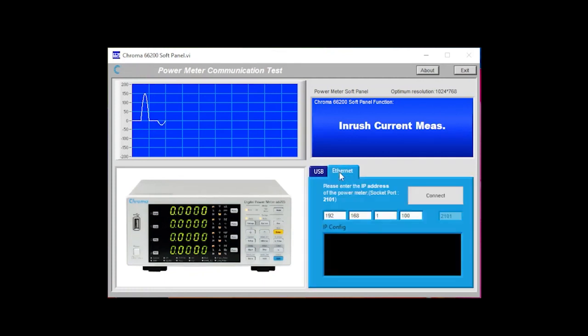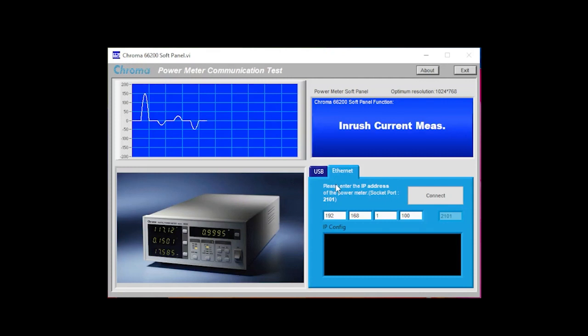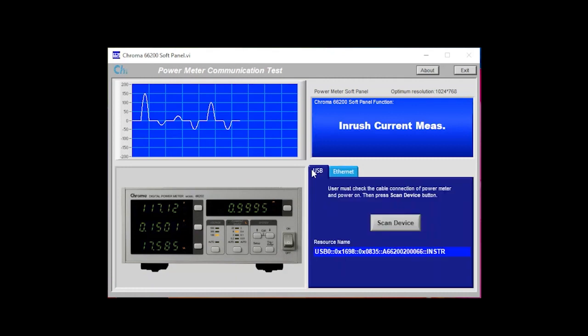We have two tabs, the USB and Ethernet tab. In these tabs, you will find the settings for your communication interface and it will connect after hitting the scan device. I get a Keypro error because I currently do not have a key connected to my computer.